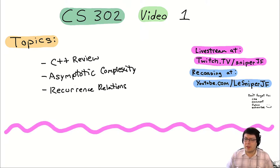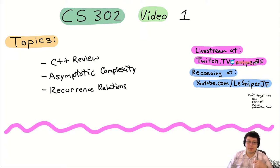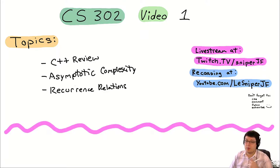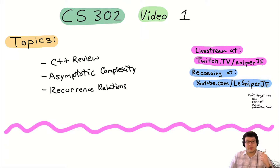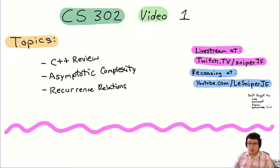Here's the plan for today. I always put more topics than we can cover, just so we have extra in case we get there. The first thing I want to do is a very brief review of C++. If there's something specific you want me to go over, ask now. Otherwise, I'll cover things people might struggle with after the summer break. Then we'll jump into asymptotic complexity, and if we get there, recurrence relations — though that will take at least a week.